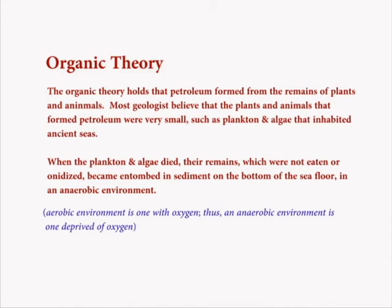Did you ever wonder where oil and gas came from? One theory is the organic theory. The organic theory holds that petroleum formed from the remains of plants and animals. Most geologists believe that the plants and animals that formed petroleum were very small, such as plankton and algae that inhabited ancient seas. When the plankton and algae died, their remains, which were not eaten or oxidized, became entombed in sediment on the bottom of the seafloor.